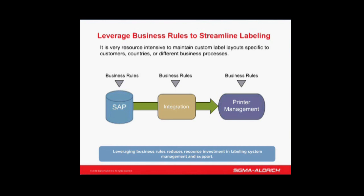What we did at Sigma Aldrich is implement, with the help of Loftware, three points for business rules depending on what information is available to the system at each of these points. In our custom SAP transaction that we built, we have some limited business rules that we can define. Loftware has allowed us to create business rules in the integration point between SAP and Loftware, and we've also created additional business rules on the printer management side in the Loftware solution.